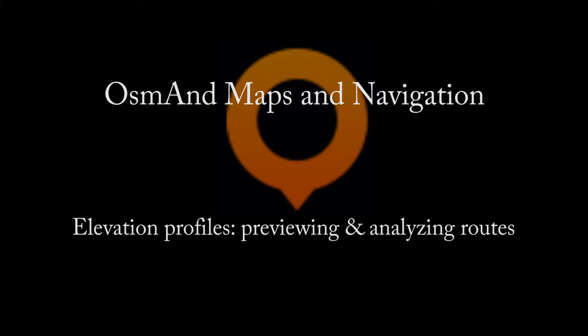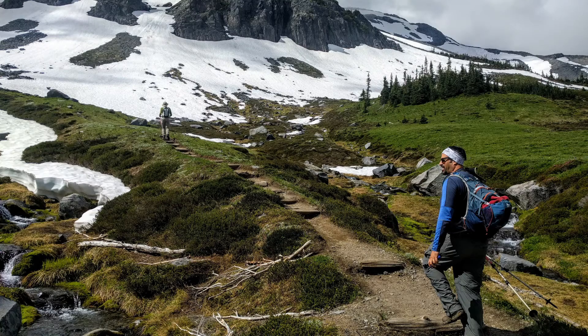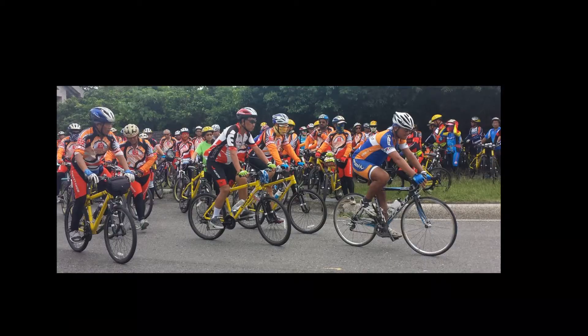This video will demonstrate how to use the Osmond Maps and Navigation app to preview routes before you take them, as well as analyze GPS tracks after you've made the trip. My emphasis is on hiking, but the same techniques apply to bicycling and other modes of transport. These features were introduced in the Android version of Osmond, version 2.6.